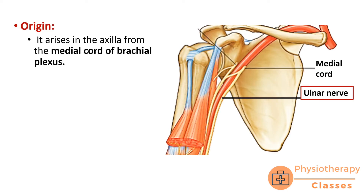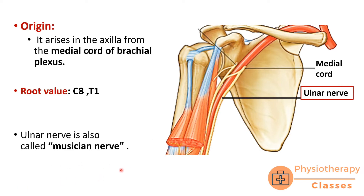The ulnar nerve arises in the axilla from the medial cord of the brachial plexus. The medial cord is medial to the axillary artery, and the ulnar nerve is in fact the continuation of the medial cord of the brachial plexus. The root value is C8 and T1. The ulnar nerve is also known as the musician's nerve because it supplies most of the intrinsic muscles of the hand, which are used for playing string musical instruments.